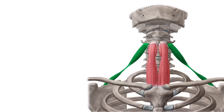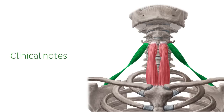The omohyoid has an additional function due to its attachment to the carotid sheath. By pulling the sheath, it maintains a low pressure in the internal jugular vein, this way increasing the blood return from the head to the superior vena cava.